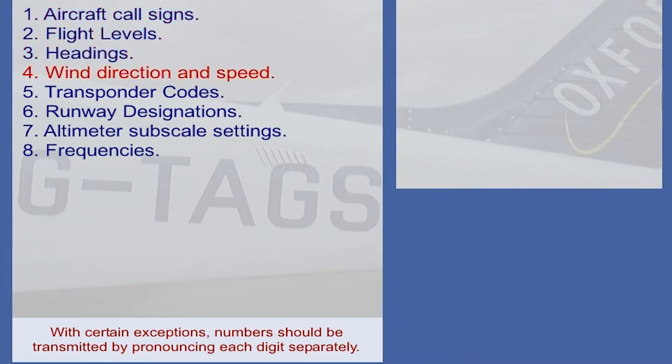Headings, wind direction and speed, transponder codes, runway designations, altimeter subscale settings, and frequencies.